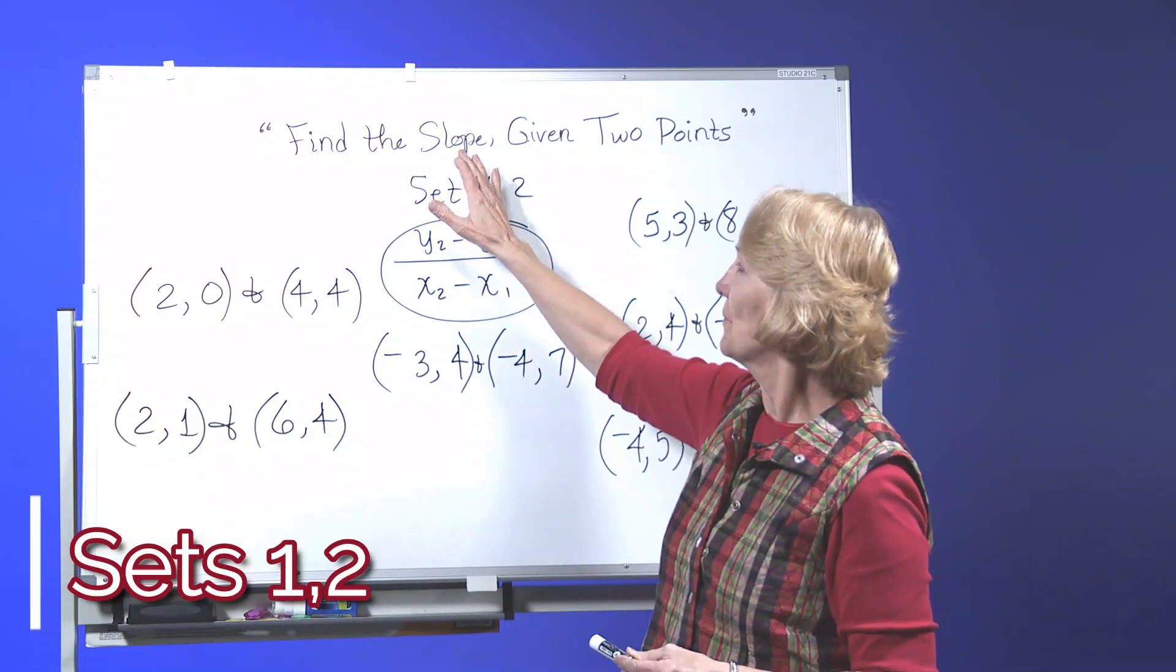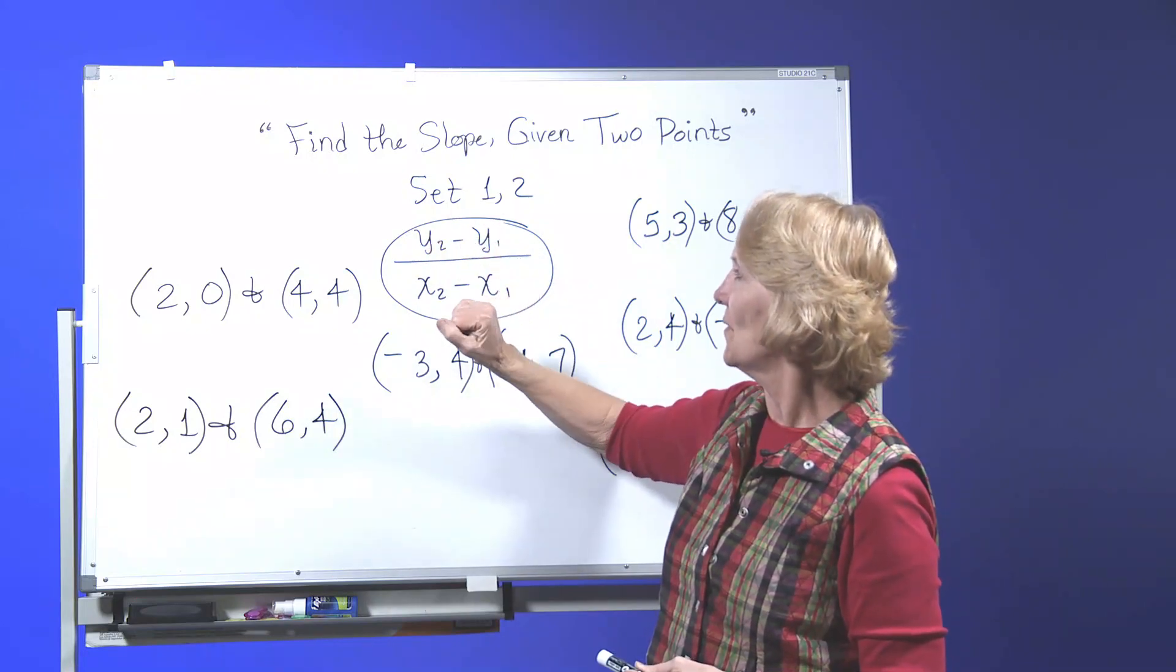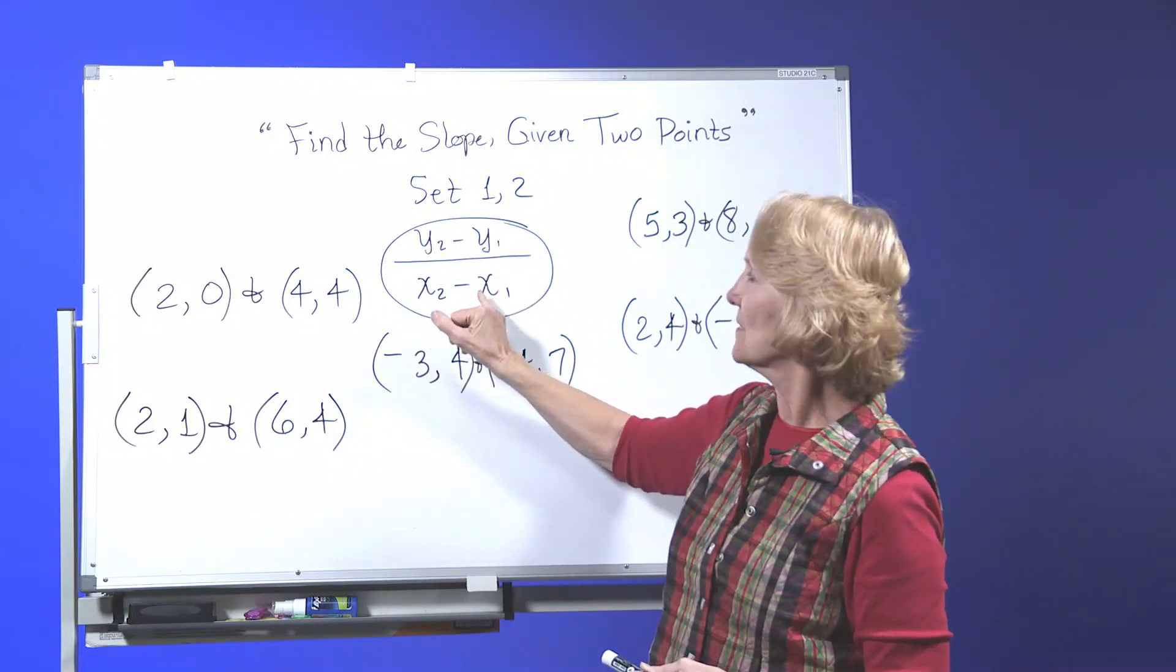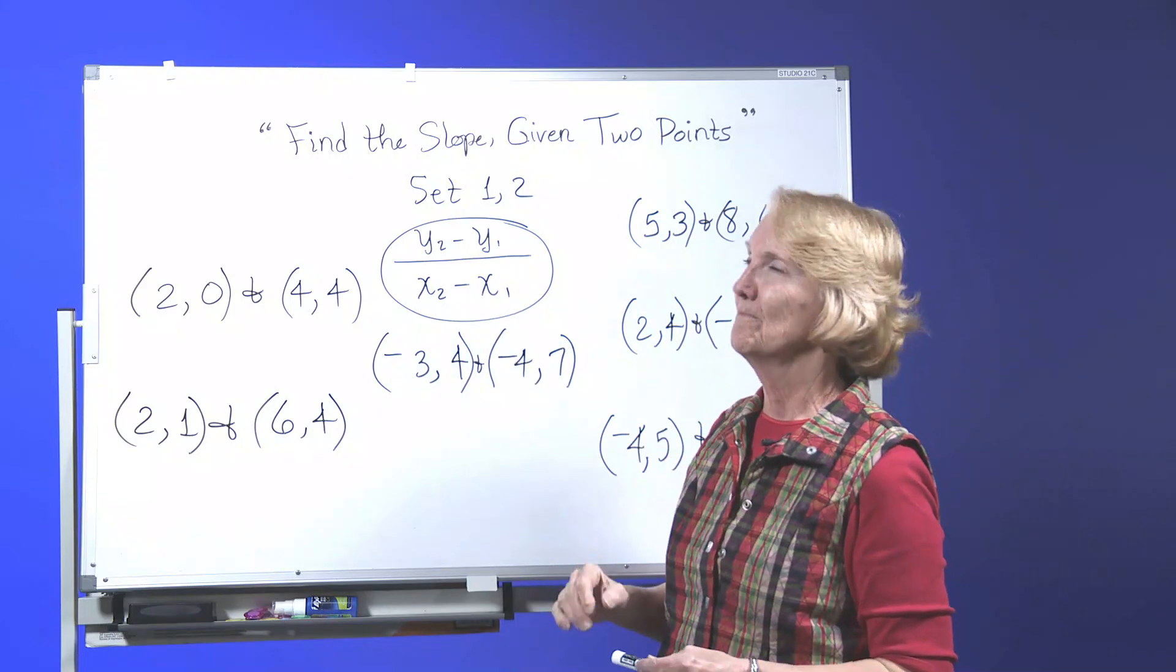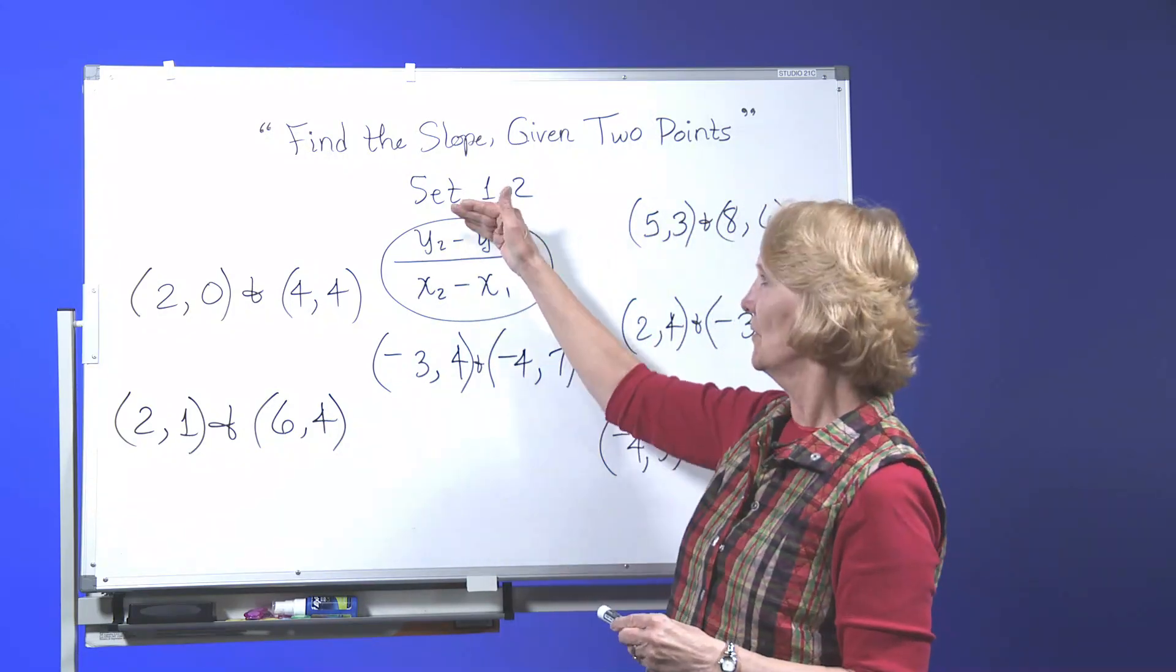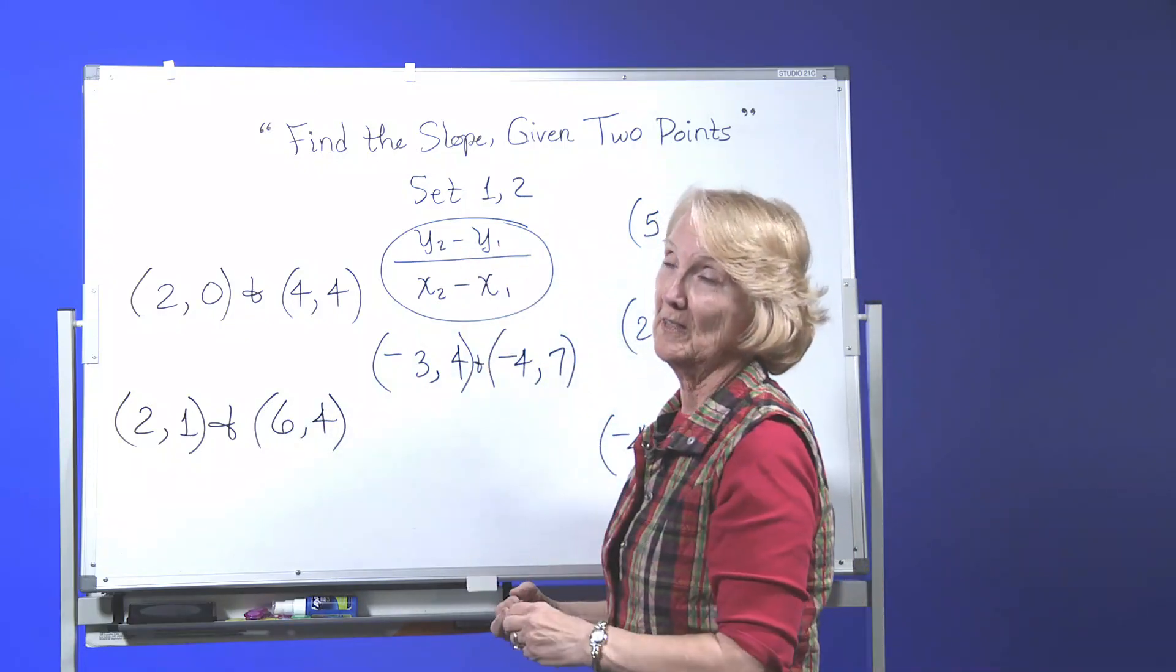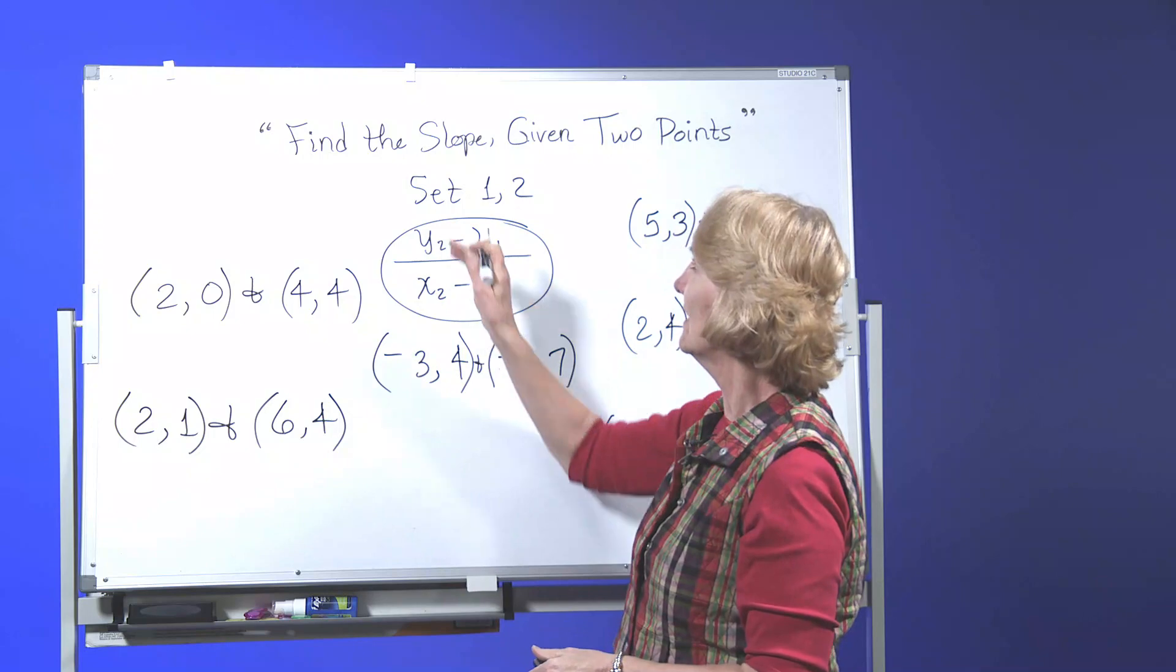To find the slope you always take the second y minus the first y over the second x minus the first x. Actually you could reverse it as long as you reverse both, the numerator and denominator. But this is the most prevalent formula that you're going to find for finding the slope.